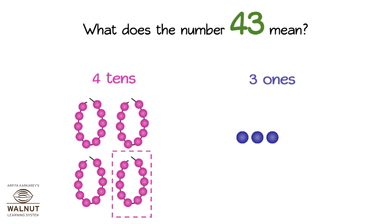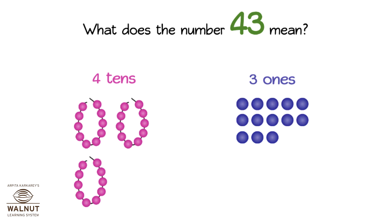what happens? We are left with three tens and we have 13 ones. So the number is still 43 — we have just split it differently.